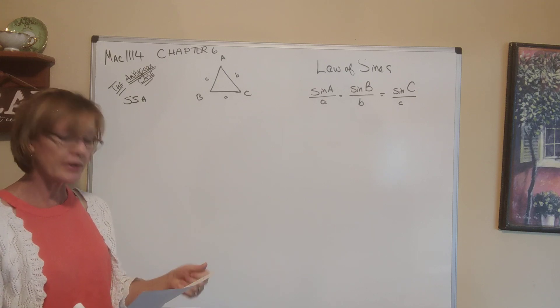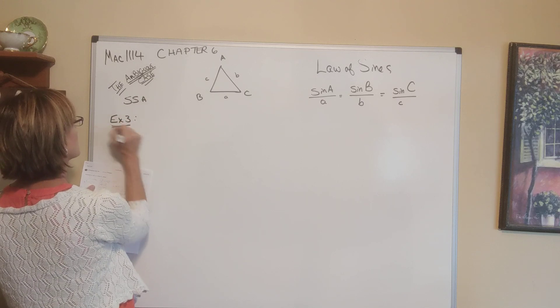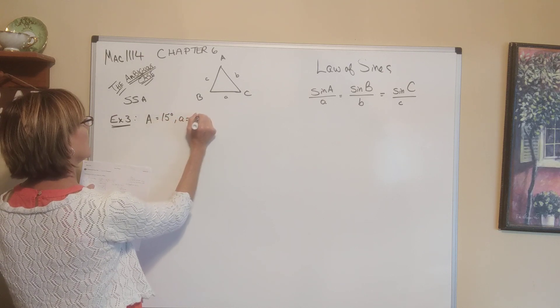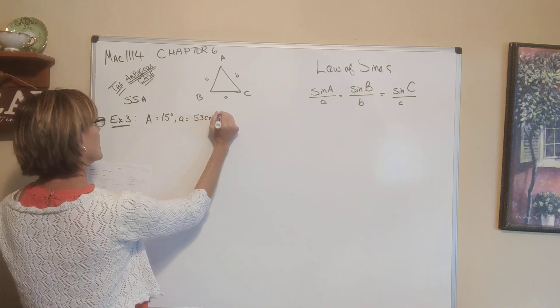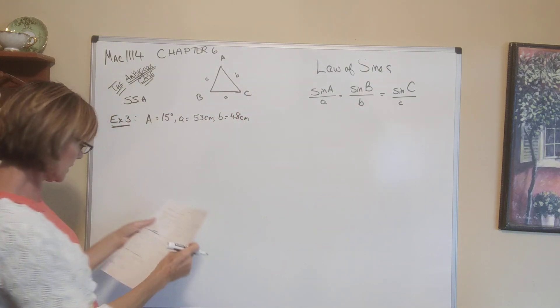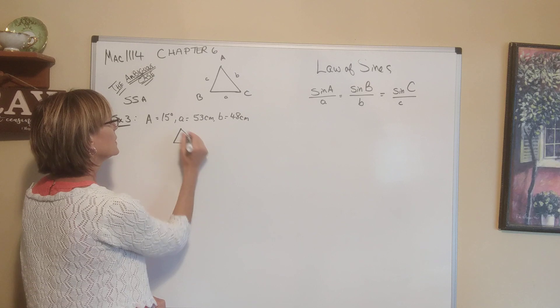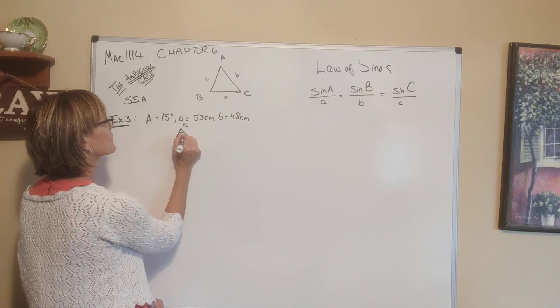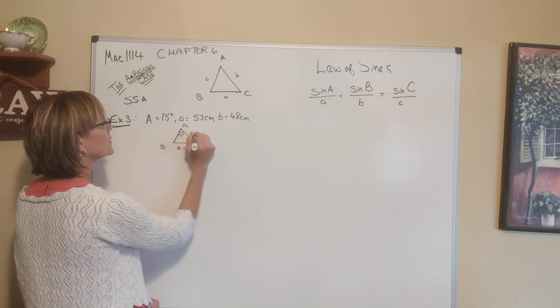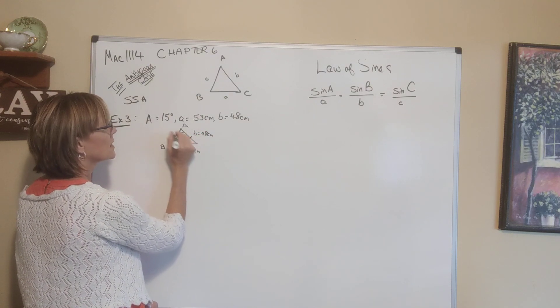On your worksheet, I have three examples. Example three goes like this. This is what we do. They give us A is 15 degrees, little a is 53 centimeters, and little b is 48 centimeters. So let us begin here and say, what did they give us? Draw yourself a triangle. This is A, they said 15 degrees. This is little a, they said 53 centimeters. This is b, little b is 48 centimeters. So they gave us side-side-angle.